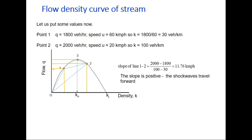Let us put some values on the flow-density curve. At point 1, we assume the flow is 1800 vehicles/hour and speed before entry of the truck was 60 km/h, so density k₁ = 30 vehicles/km. At point 2, we assume flow is 2000 vehicles/hour and truck speed is 20 km/h, so density k₂ = 100 vehicles/km. The slope of line 1-2 will be (2000 - 1800) / (100 - 30) = 11.76 km/h. Since this slope is positive, the shockwave will travel in the forward direction.